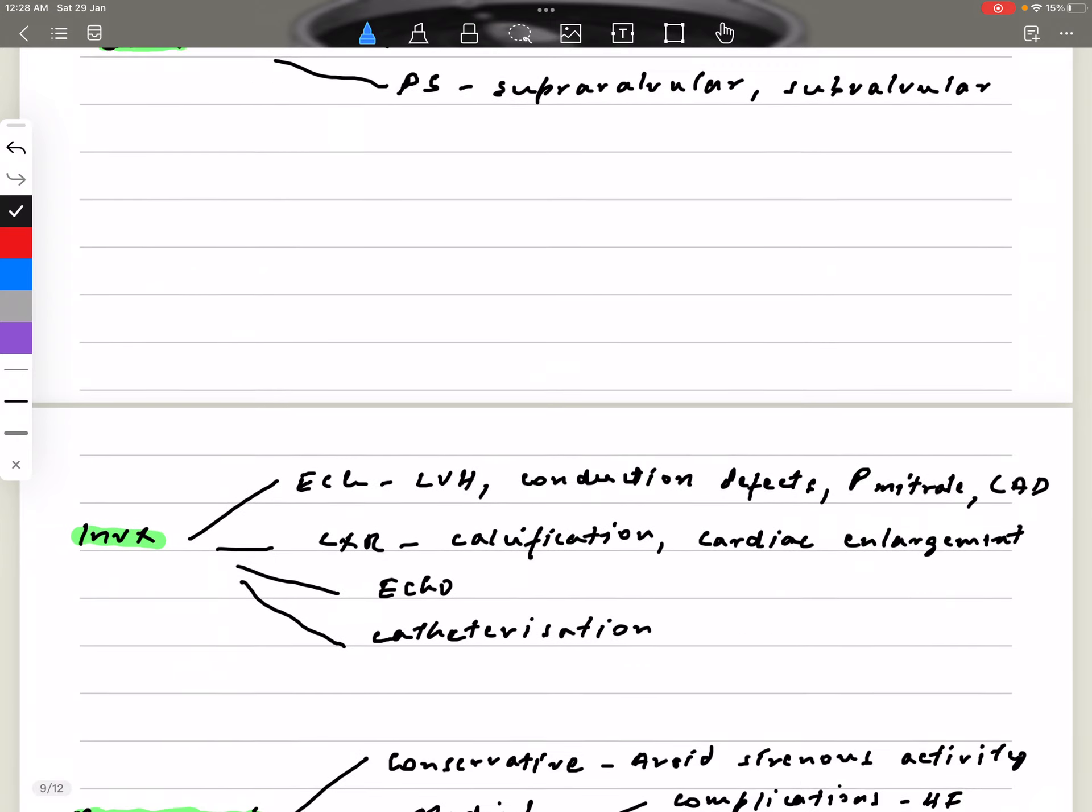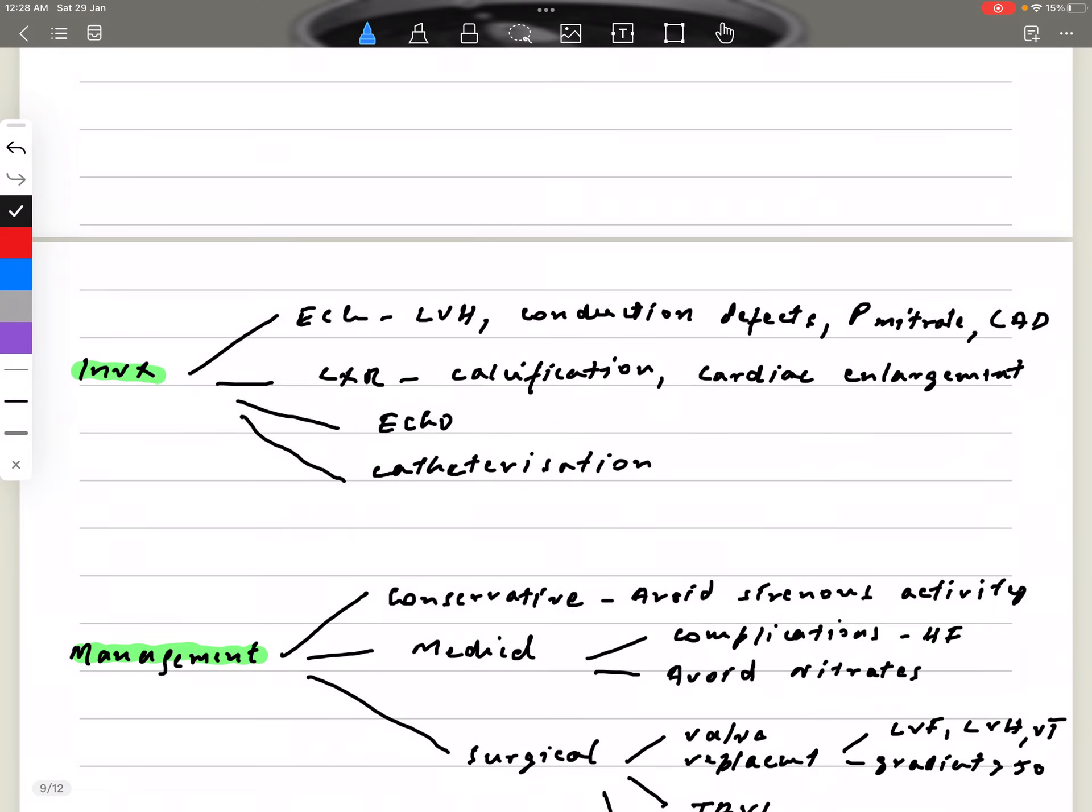Coming to the investigations, as with all valvular heart diseases, I'm going to start with the ECG. Why do you want to do ECG? You want to look for left ventricular hypertrophy. There may be some conduction defects, maybe P mitrale, which is a bifid P wave, or there may be any evidence of coronary artery disease, like maybe T-wave inversions or maybe old Q waves from old MI.